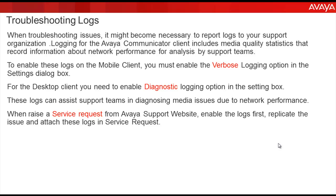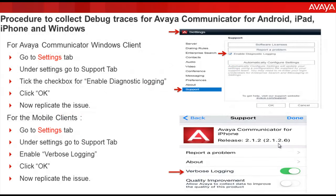Let's take a look at the procedure to collect the debug traces for Avaya Communicator. For the Windows client, login to the Avaya Communicator application. Go to the settings tab, then under the settings tab go to the support tab. Under the support tab, there is an option for enable diagnostic logging. Tick the checkbox in front of enable diagnostic logging and click OK.